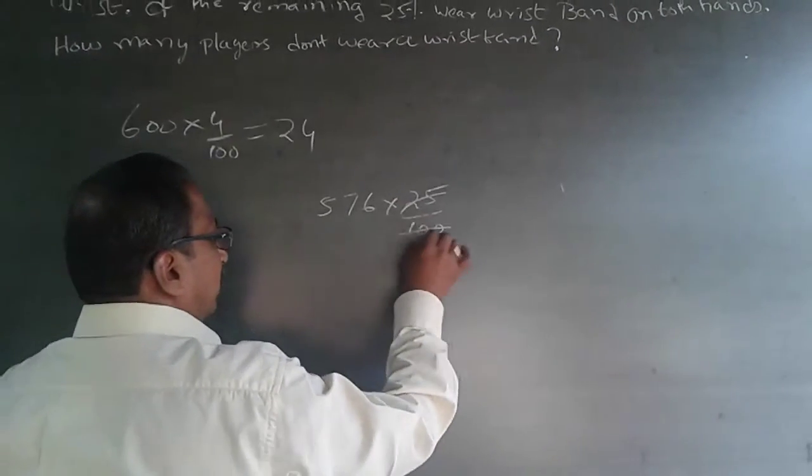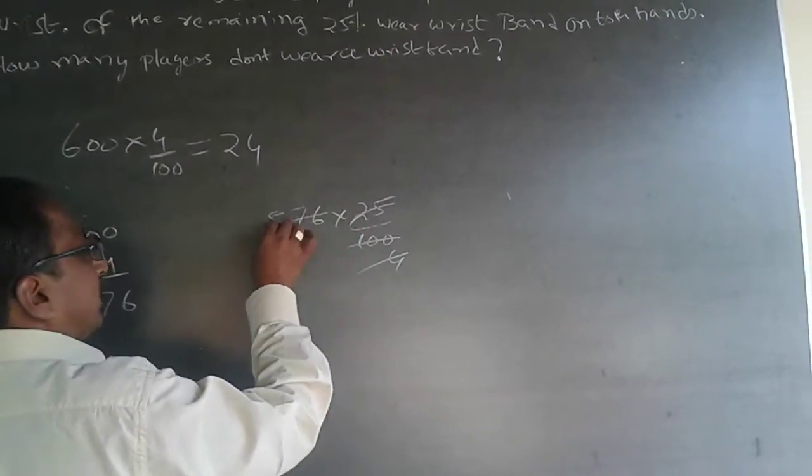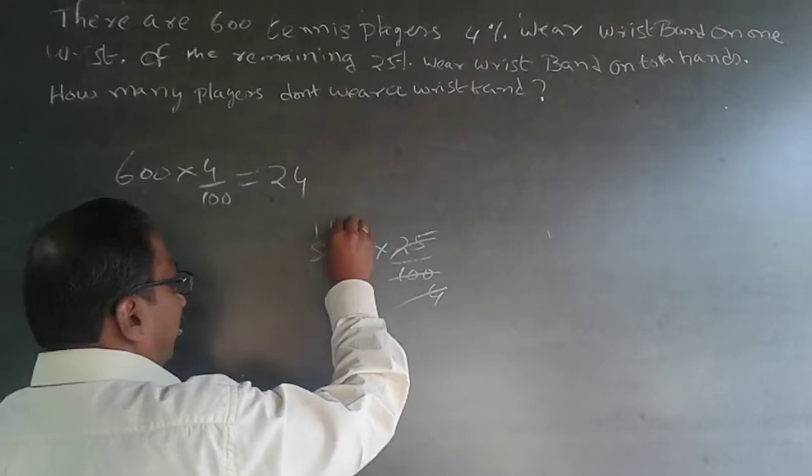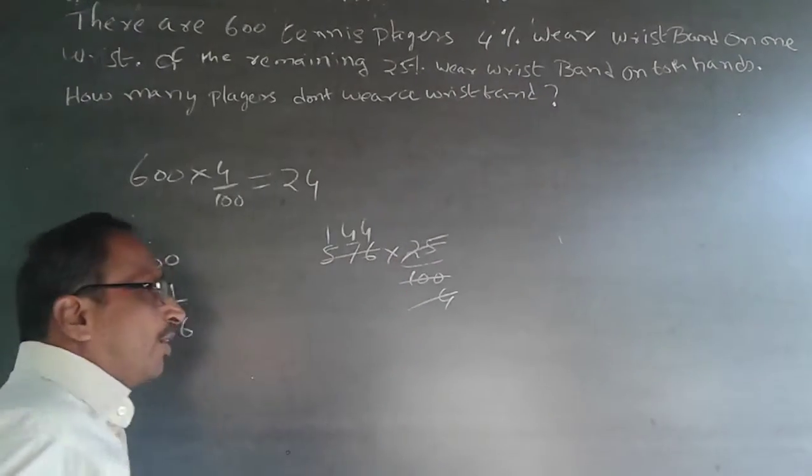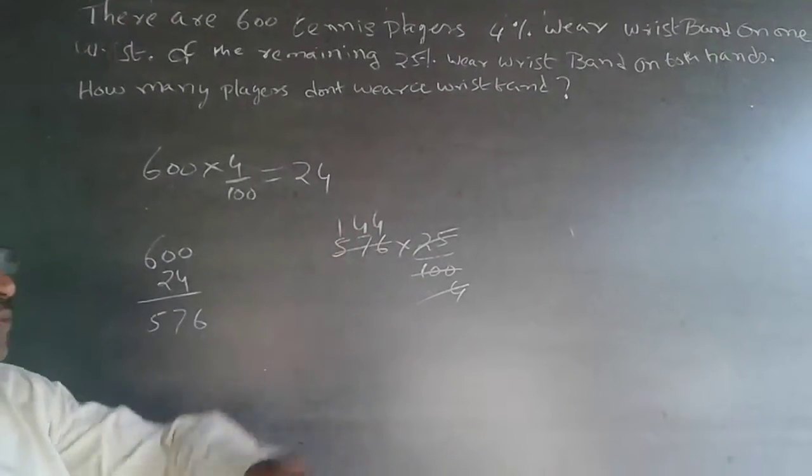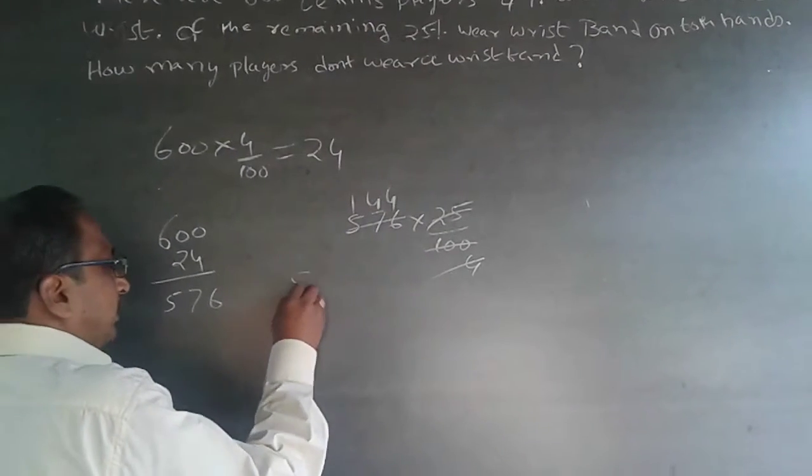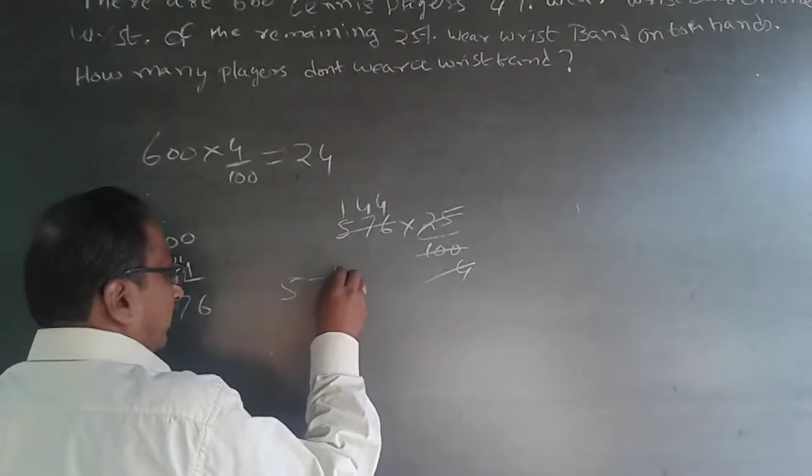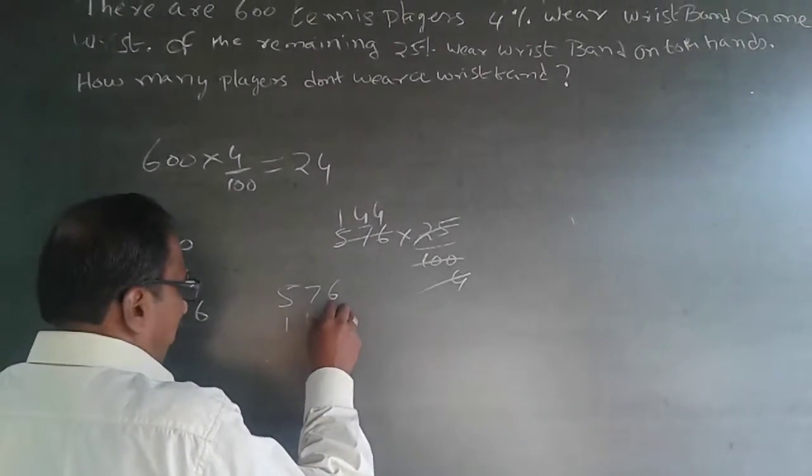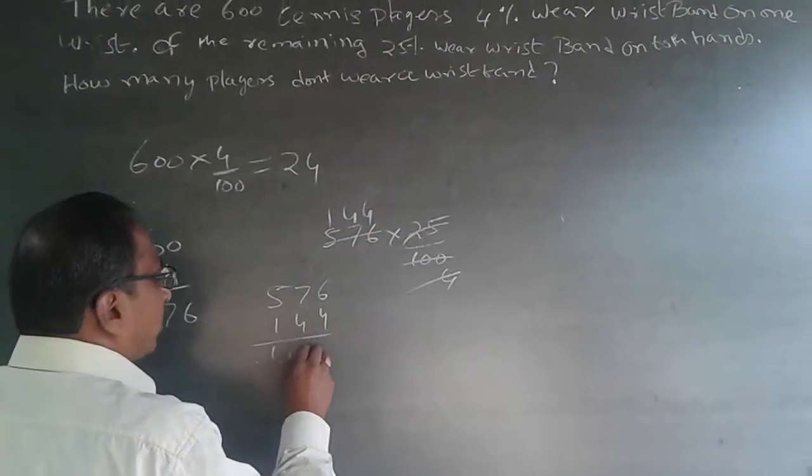So this will get cancelled. This will be 4. Now when this gets cancelled it will be 1. 70 will be 4. 60 will be 4. So 144 people are wearing wristband on both hands. Now 576 minus 144. 576 minus 144 will be 432.